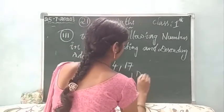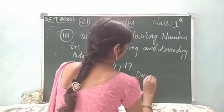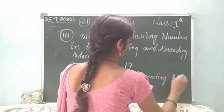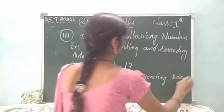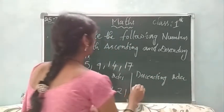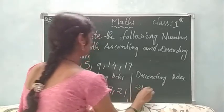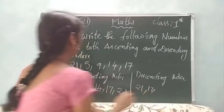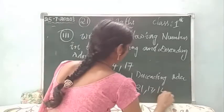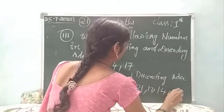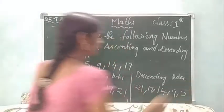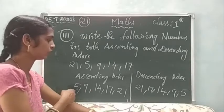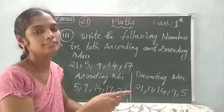Descending order: 21, then 17, and 14, and 9, and 5 — the smallest number. Okay, children, how do you understand? Ascending order and descending order. Okay.